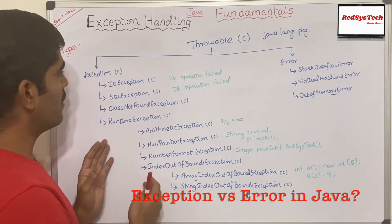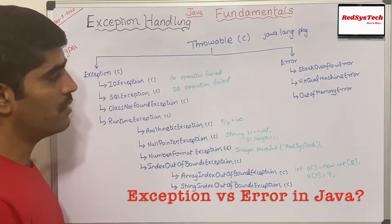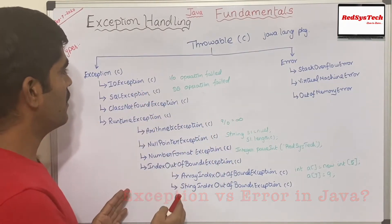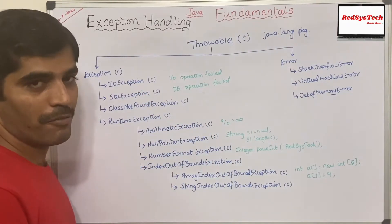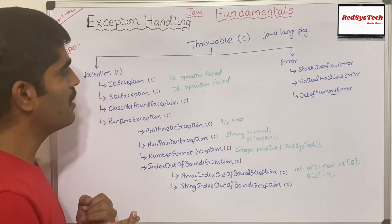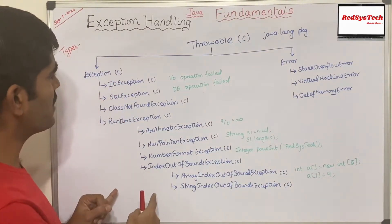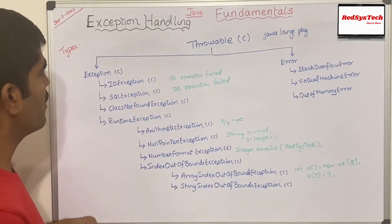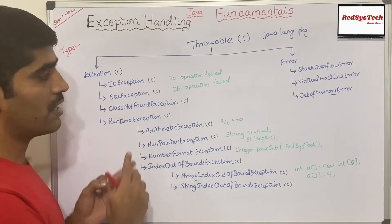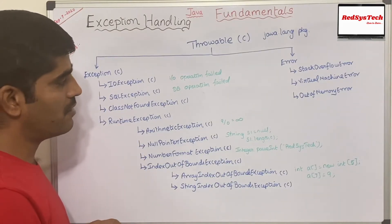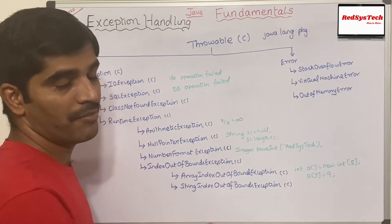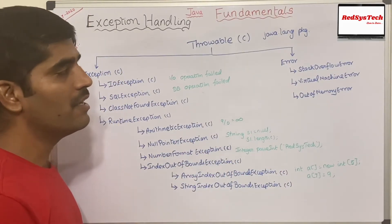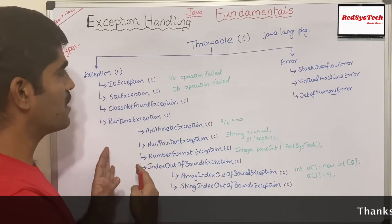To summarize: exceptions are caused by our program, while errors are not caused by our program. Exceptions are not caused by the lack of resources, whereas errors are caused by the lack of resources. If any exception occurs, it is recoverable — we can catch and handle it — but if any error occurs, we cannot handle it because the program will automatically terminate.